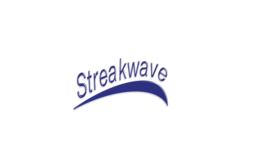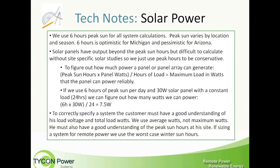We use six hours peak sun for all system calculations. Typically when you're doing a system, you really want to calculate the minimum sun for a particular area. Every area is different — even areas within the same state are different. Six hours is kind of in the middle of the road: it's optimistic for Michigan and pessimistic for Arizona.